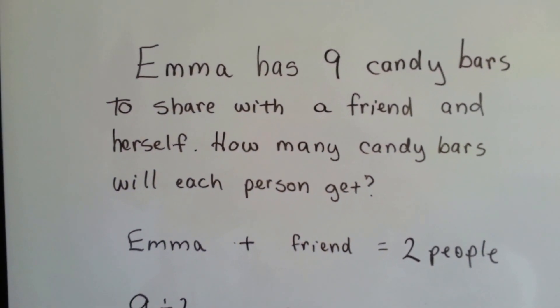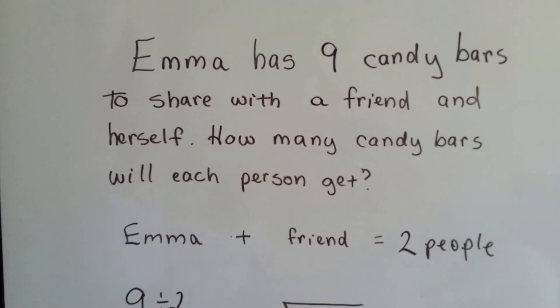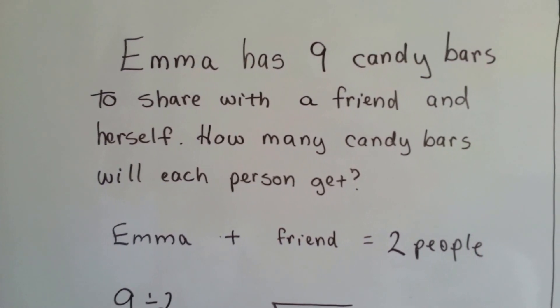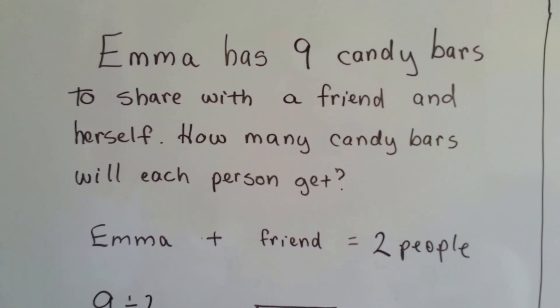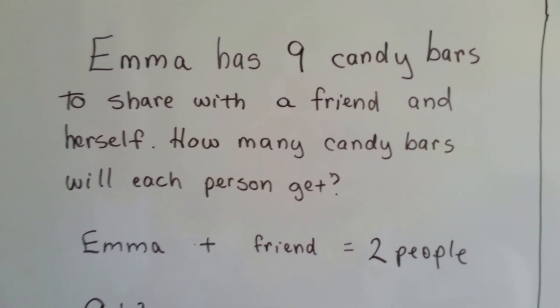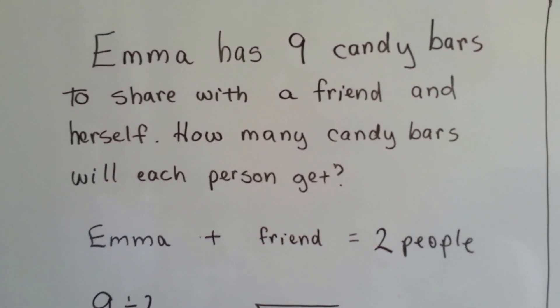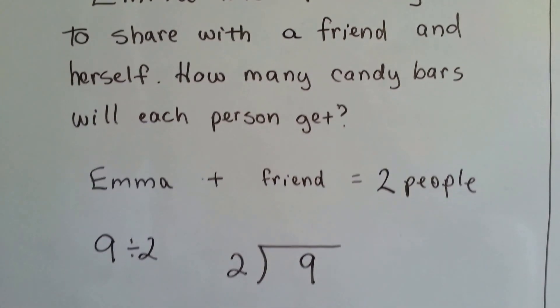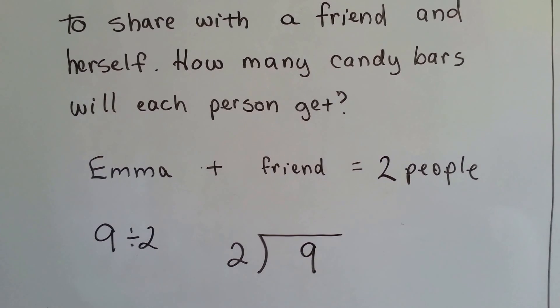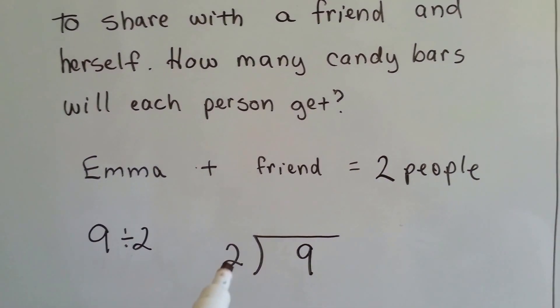Here's our favorite word problem girl. Emma has nine candy bars to share with a friend and herself. How many candy bars will each person get? Well, Emma plus one friend, that's two people. So we need to share nine candy bars between two people. So that's nine divided by two. Nine divided by two.